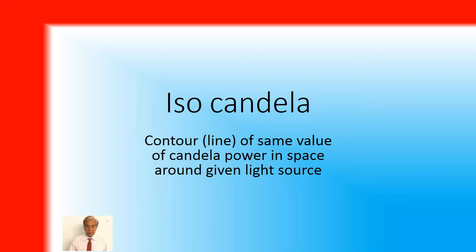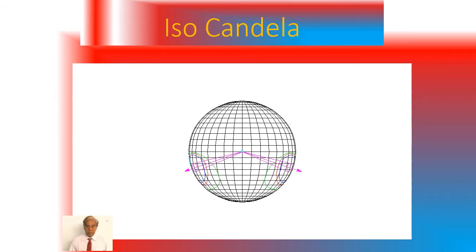Isocandela diagram: contour line of same values of isocandela power in the space around a given light source is known as isocandela. For example, you have values of spherical surface having elliptical shape diagram which gives you the same value of intensity if you travel around those lines.